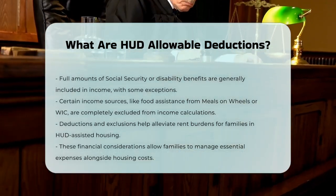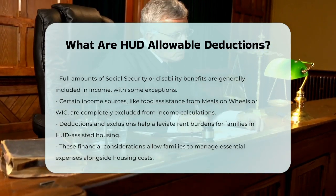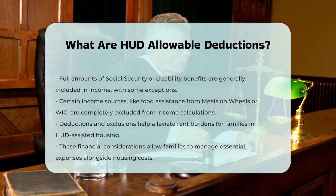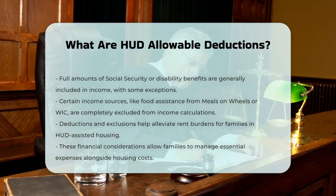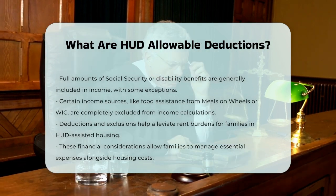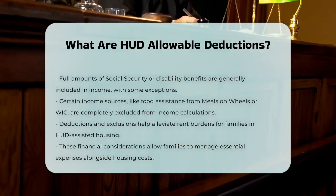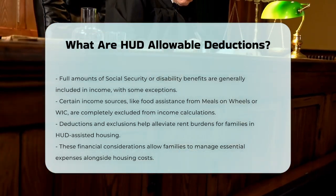Lastly, some income sources are entirely excluded from the calculation of annual income, such as the value of food provided through programs like Meals on Wheels or WIC, and certain stipends or allowances for resident services. These deductions and exclusions help ensure that families in HUD-assisted housing are not overburdened by rent costs and can afford other essential expenses.